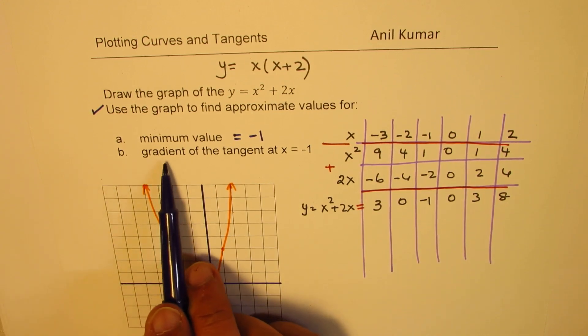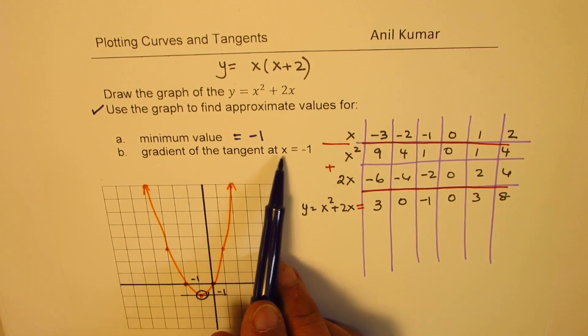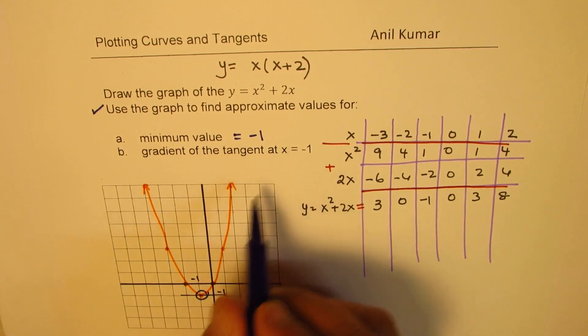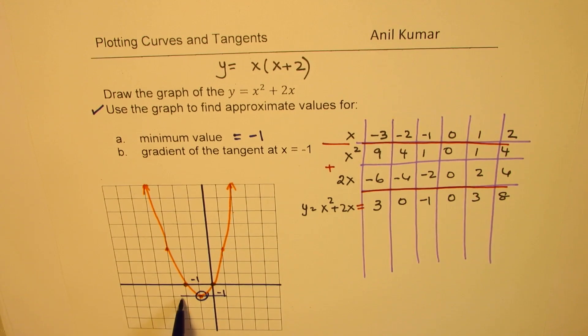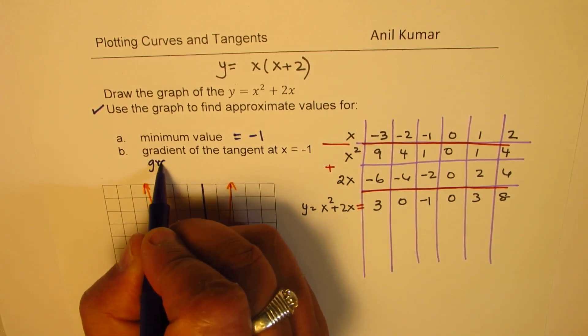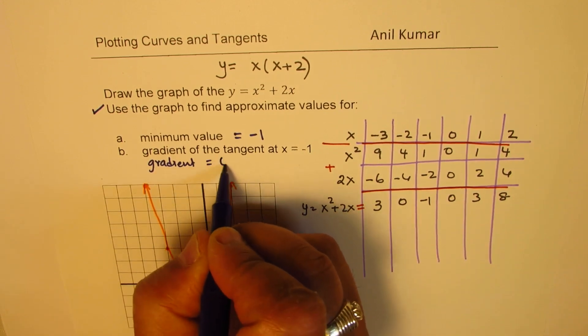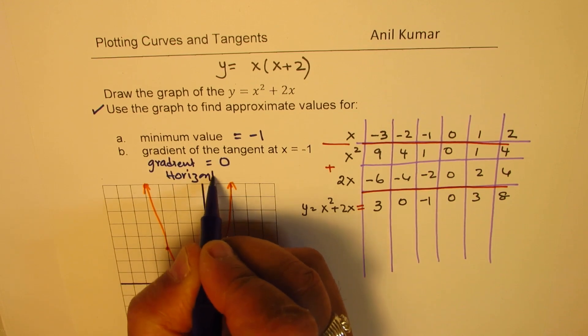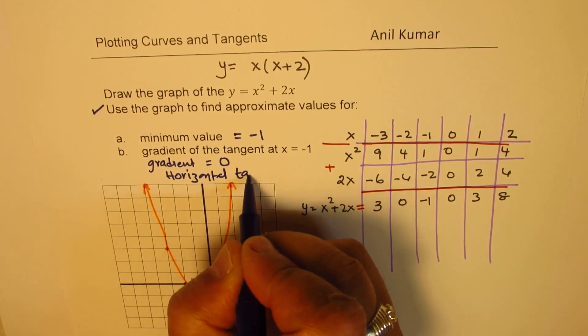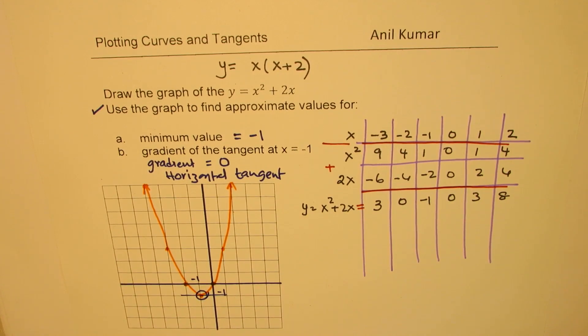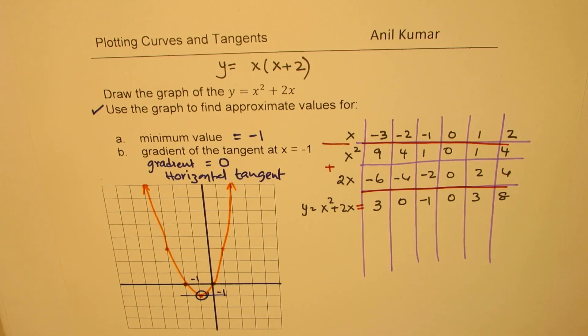Now, part B is gradient of the tangent at x = -1. Well, at -1, this is the turning point and we have already drawn this particular line. So we have the gradient is equal to 0, since we have a horizontal tangent. So that is how you're going to figure it out.